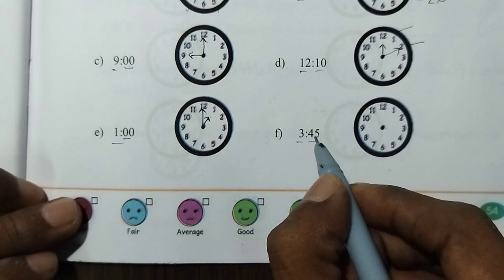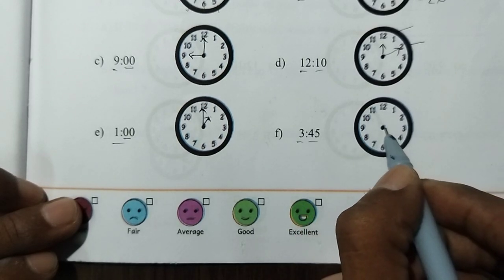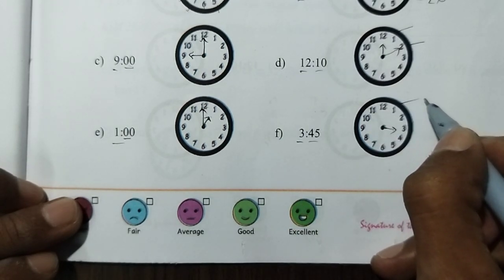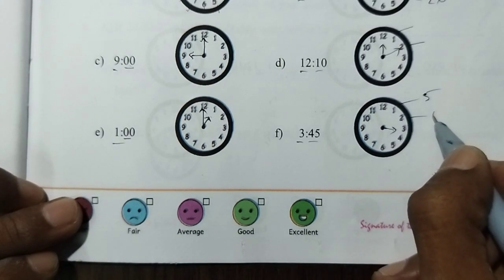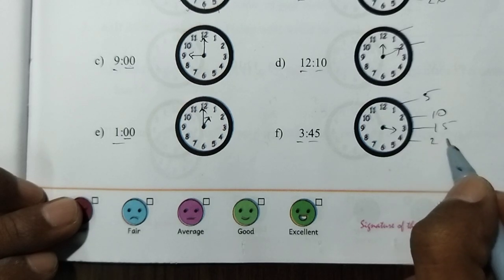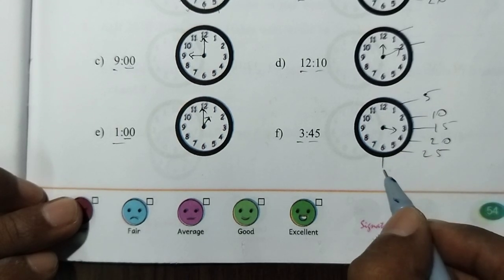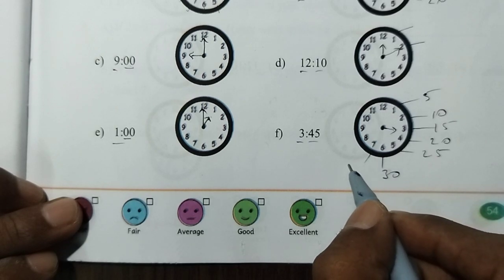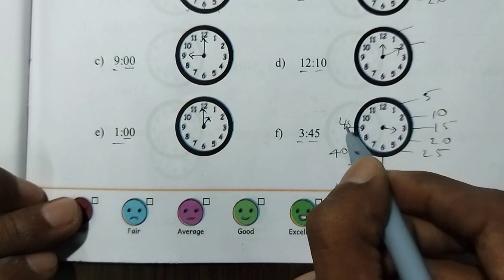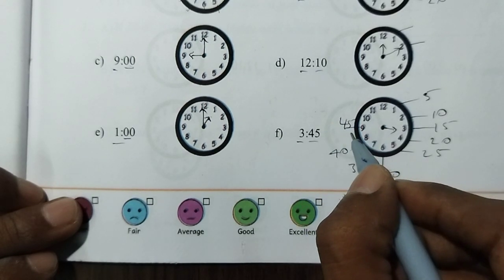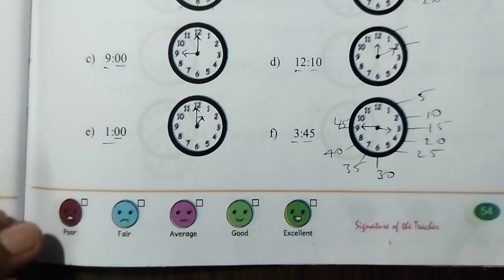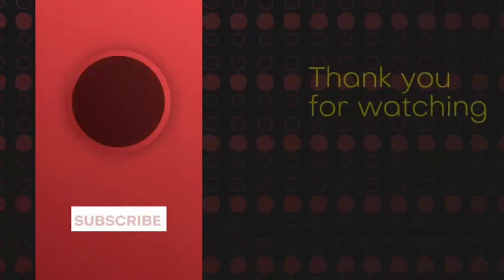For 3:45, let's count. Counting by fives: 5, 10, 15, 20, 25, 30, 35, 40, 45. That's 9 on the clock, so the big hand is at 9.